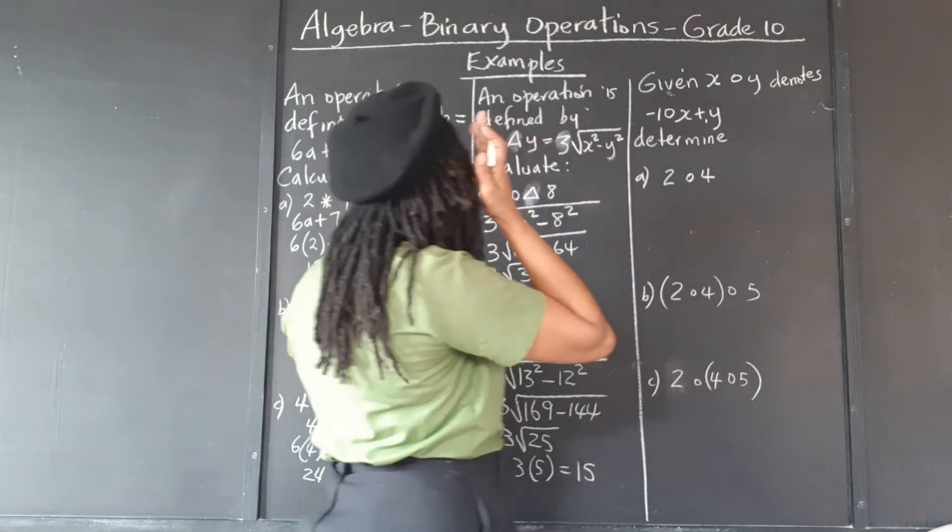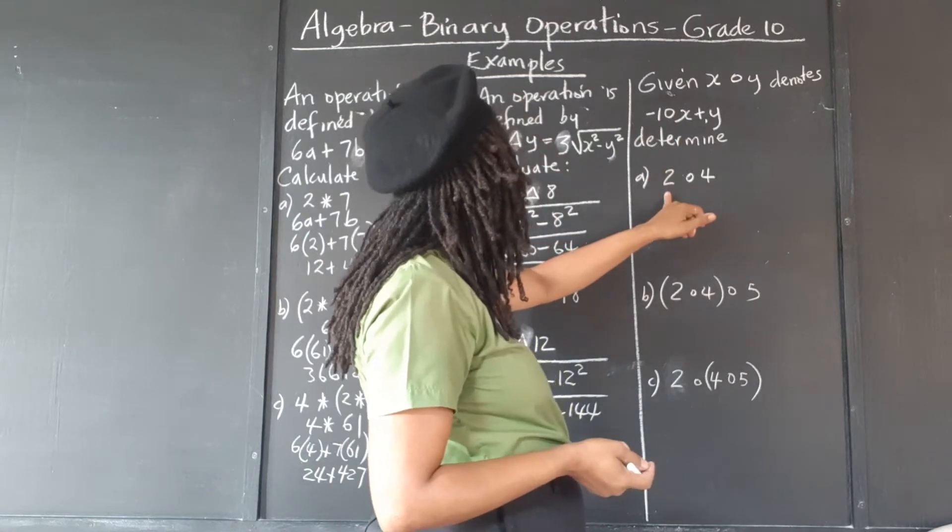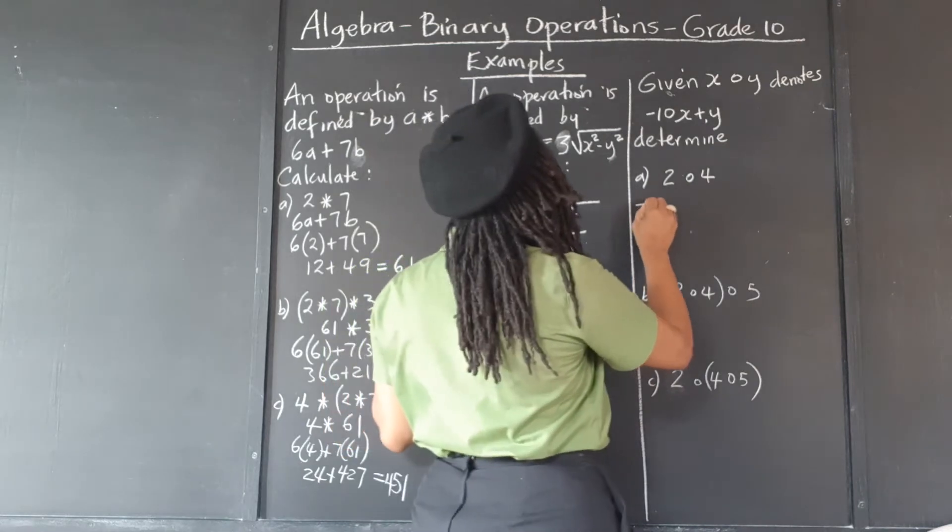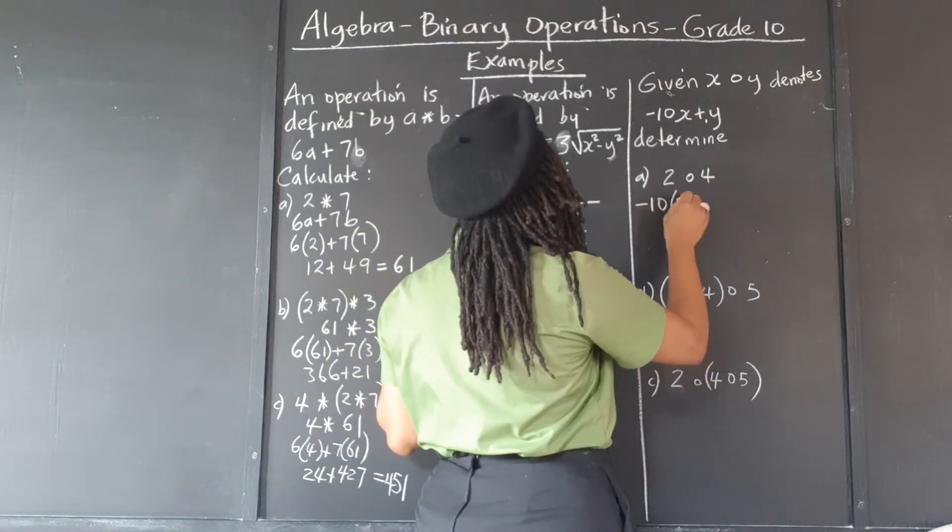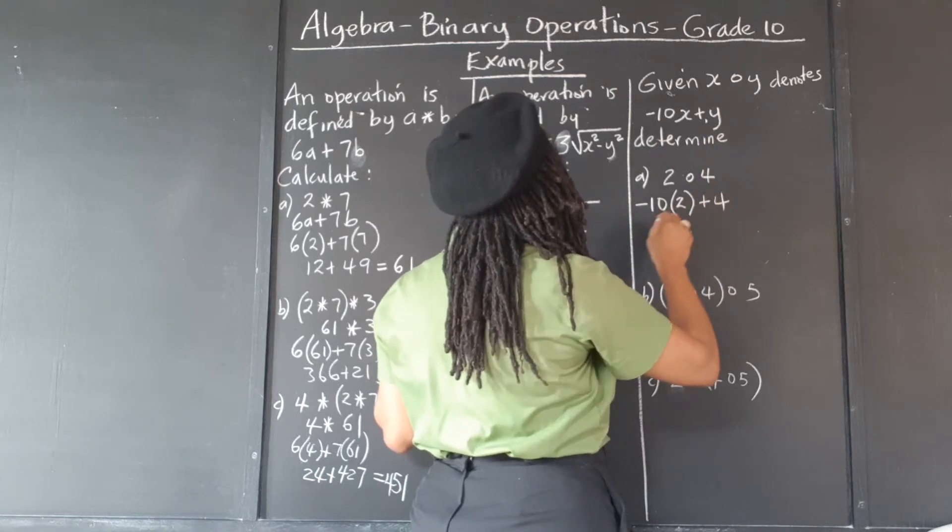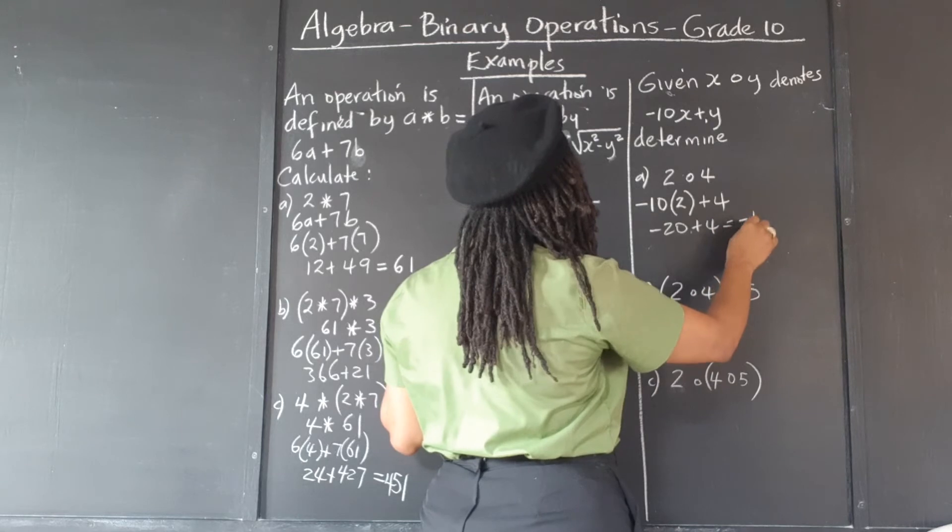x is, we're going to substitute 2, and wherever y is, we're going to substitute 4. So that would mean negative 10 times 2 plus 4. That's negative 20 plus 4, which is negative 16.